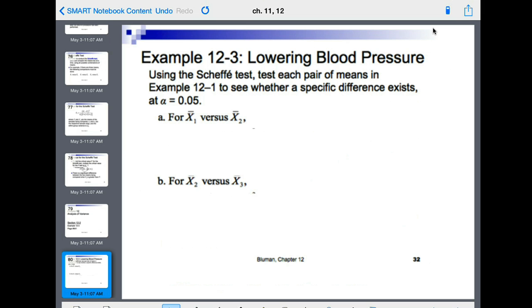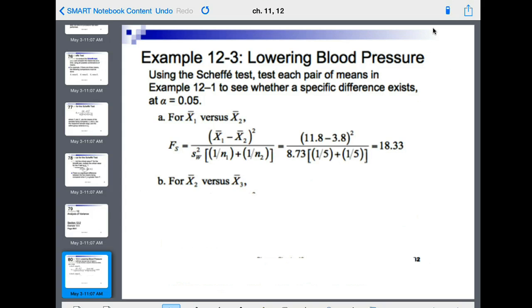When we did the example before, we had our means and stuff. So we're first going to come here and say, okay, X bar 1, X bar 2, squared, divided by within. And this is that first sample we did. So we got 11.8 minus 3.8 squared, divided by 8.73, 1 over 5, 1 over 5, equals 18.33.